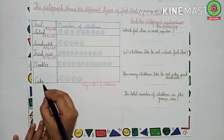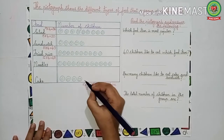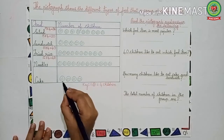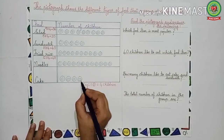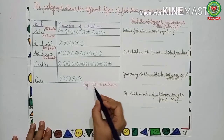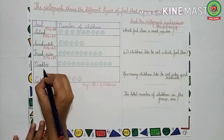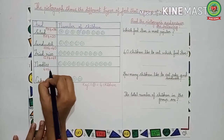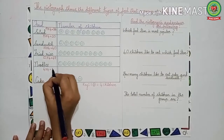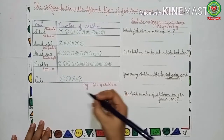Next is cake. Let us count how many smiley faces have been drawn: only four smiley faces. One smiley face is equal to four children, so we will multiply four by four. Four fours are 16. Sixteen children like cake.